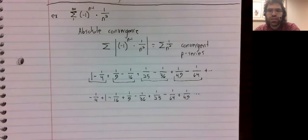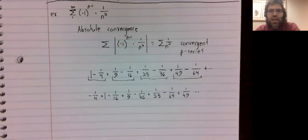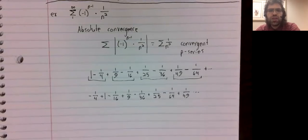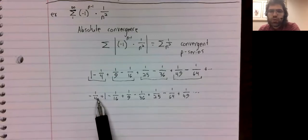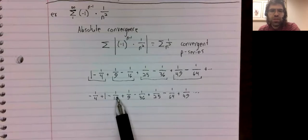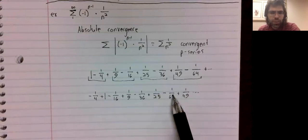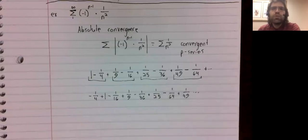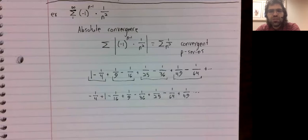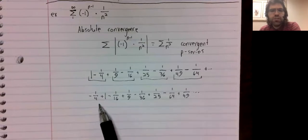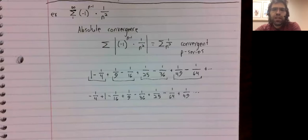But it does not satisfy the conditions of the alternating series test. 1 is greater than 1/4, 1/9 is greater than 1/16, 1/25 is greater than 1/36, 1/49 is greater than 1/64, and so on — we do not have decreasing terms. Even though their limit is going to zero, it's not going to zero monotonically. So here's an example of a convergent series whose convergence cannot be demonstrated using the alternating series test.